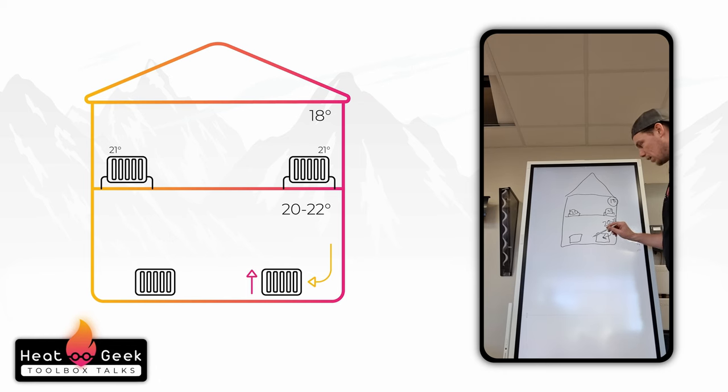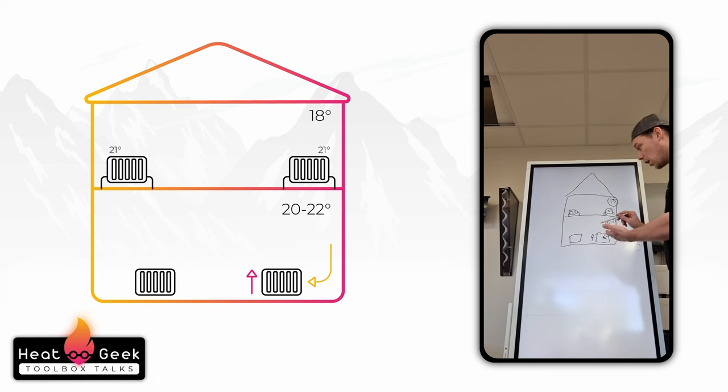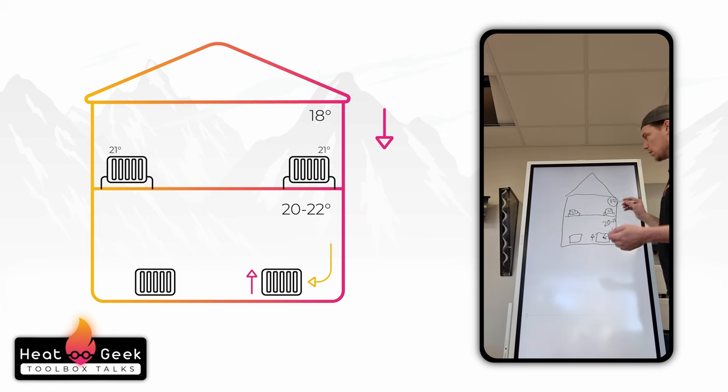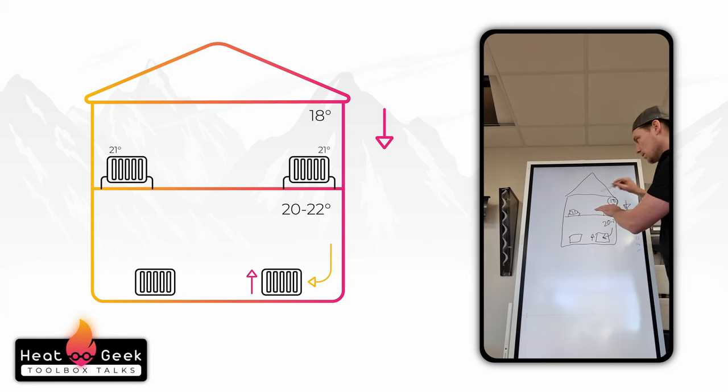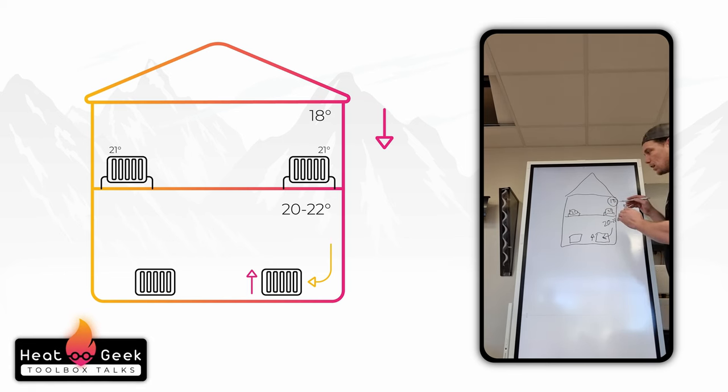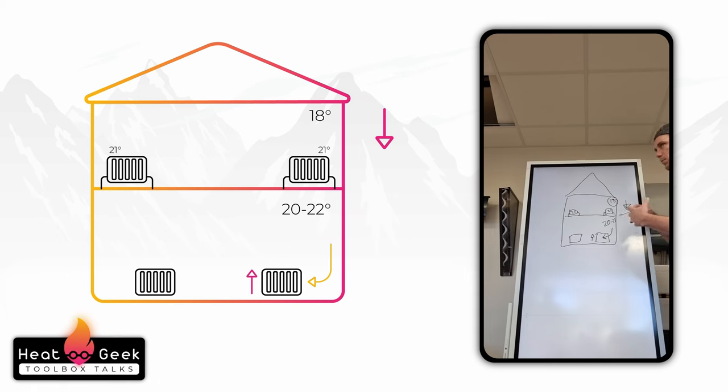That'll push more flow into these radiators. So the radiators in here will become a higher mean temperature. If they become a higher mean temperature, we get to drop the curve down on the heat pump and we increase COP. So we're reducing demand by dropping the flow temperature, and when it puts in less energy its COP increases.